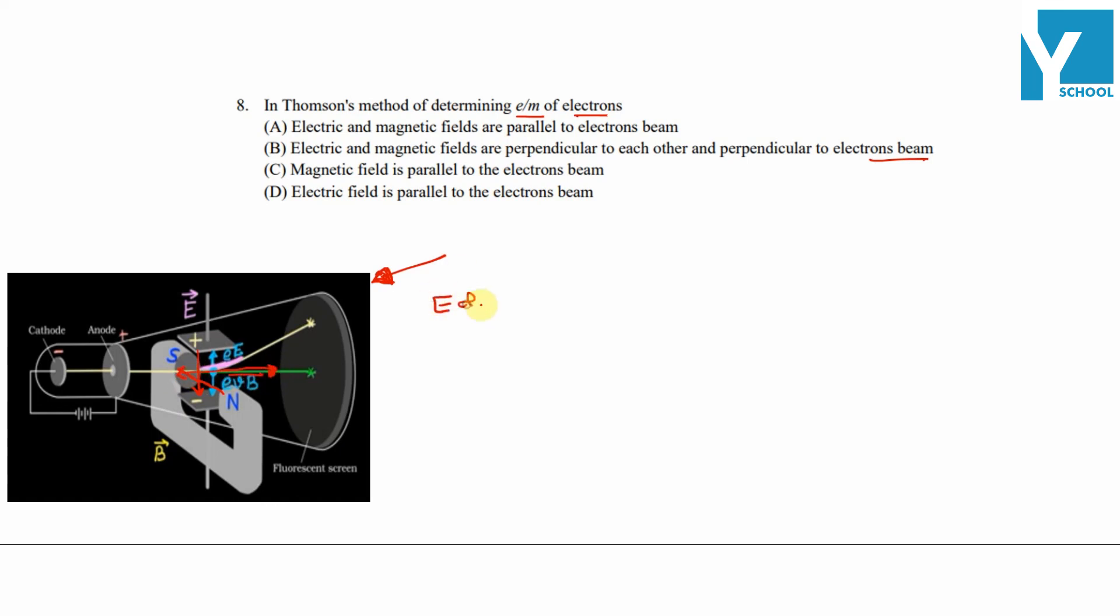Electric field and magnetic field are perpendicular to each other as well as to the electron beam. As per the options, option B is the right answer.